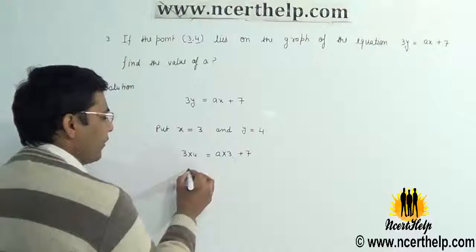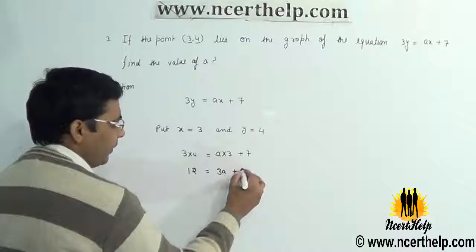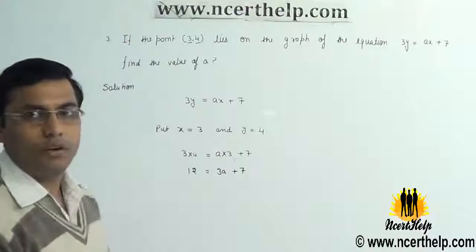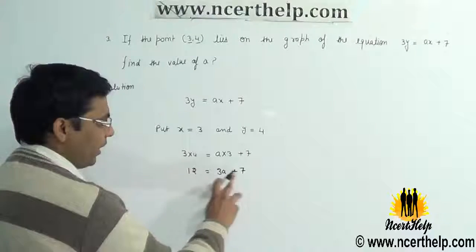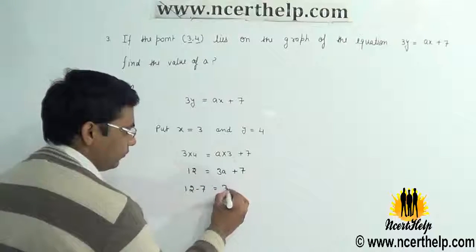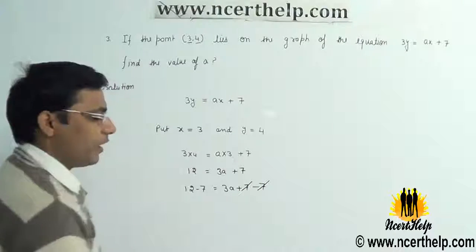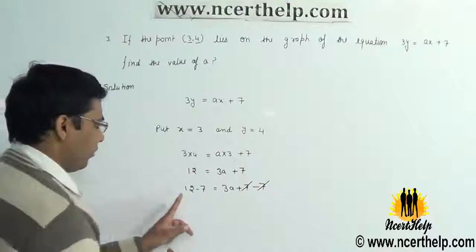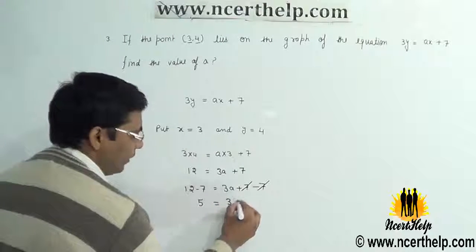Now, 3 times 4 gives me 12. 3a + 7. Now I want to find the value of 3a, so I am going to subtract 7 from both sides. When I subtract 7 from both sides, I will get 12 - 7 gives me 5. 5 = 3a.